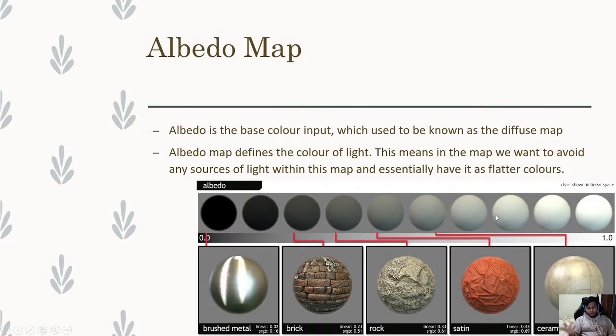So albedo map which is our first map is the color map. Albedo is the color input which used to be known as the diffuse map. Before there used to be a workflow called the diffuse specular gloss, however this PBR is new and updated for the new gen. Albedo map defines the color of light. This means in the map we want to avoid any source of light within this map and essentially have it as flattened colors.